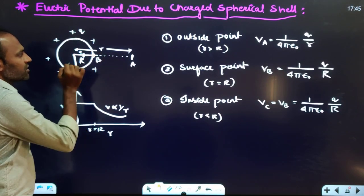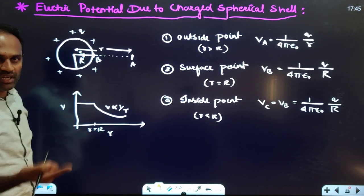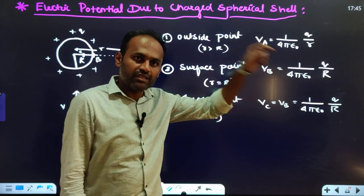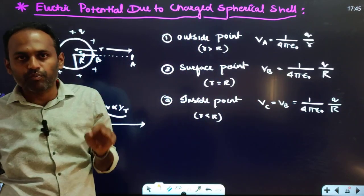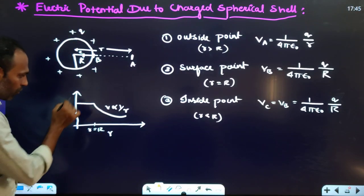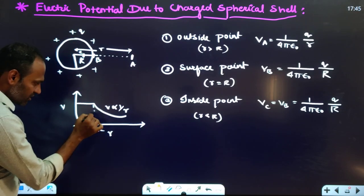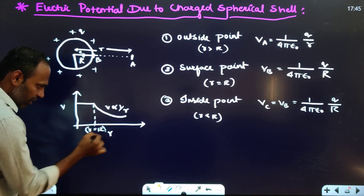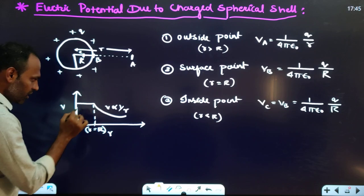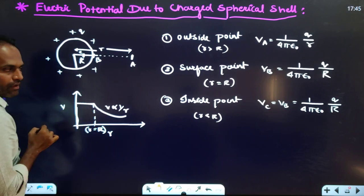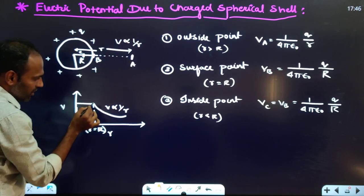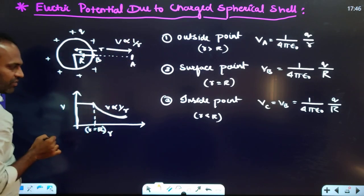For an inside point, electric field is 0, but potential is not 0. The potential inside the sphere is the same as the surface potential, i.e., (1/4πε₀) × Q/R. In the graphical variation: from the center to the surface, potential remains constant; beyond the surface, potential is inversely proportional to r and goes on reducing.